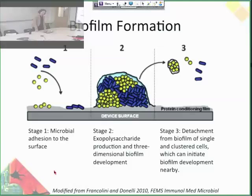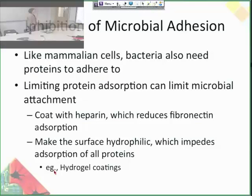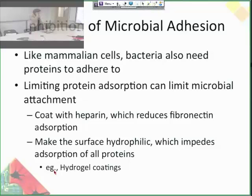This is why understanding biofilm microbiology was so important — they do behave differently from regular bacteria. The first strategy might be inhibition of microbial adhesion. Like mammalian cells, bacteria also need proteins to adhere. If you limit protein adsorption, that can really limit microbial attachment. Bacteria can still bind to hydrophilic surfaces, but they'll definitely have a harder time. So a lot of times researchers trying to develop anti-biofilm biomaterials just make them hydrophilic. You can coat with heparin, which reduces fibrin adsorption. Hydrogel coatings are really popular — hydrogel-coated catheters are very useful in the clinic.